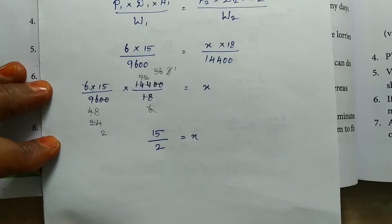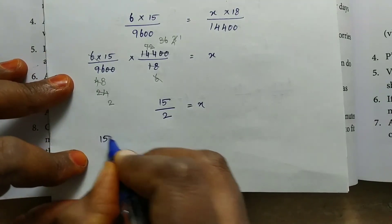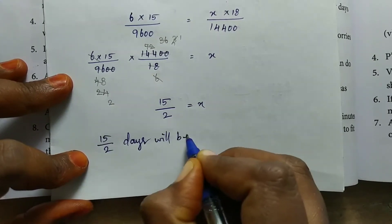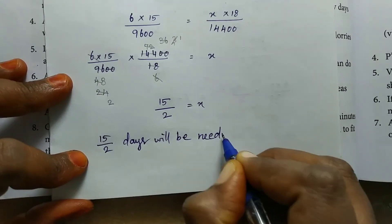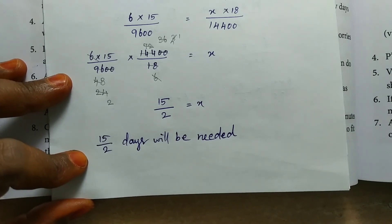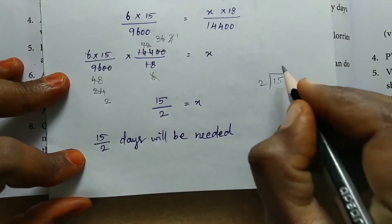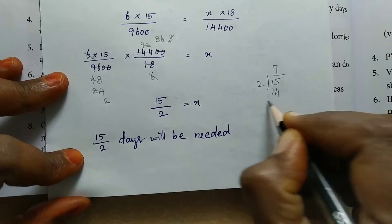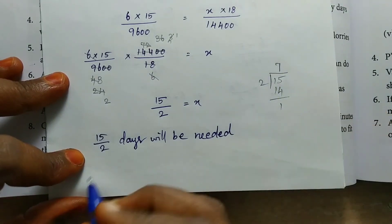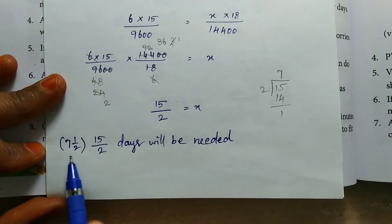So number of days is 15 divided by 2. So 15 divided by 2 days will be needed. 7 twos are 14, divided by 1. Mixed fraction convert: 7 and 1 by 2, so number of days is 7 and a half days.